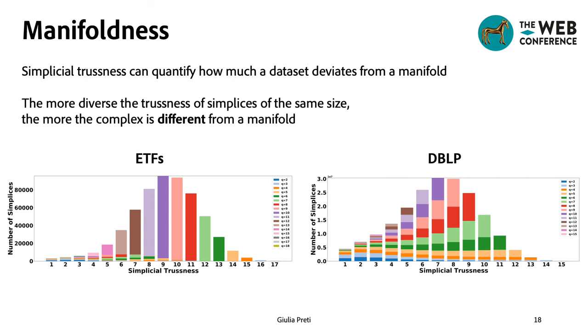As you can see, the financial data set ATF is more similar to a manifold than DBLP, because almost all the simplices of the same size have the same simplicial trussness.